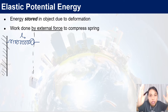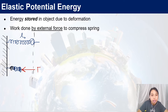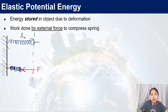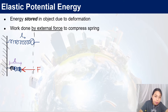Then comes along a force that squashes that spring, because of an external force that did some work on it. I'll label it F. Now, the length of the spring is not L0 anymore — it's changed to something else. We can label the new length as just L. The compressed distance caused by this force is what we call X.